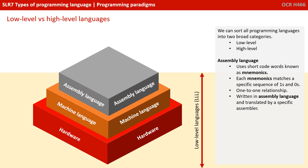Next, on top of machine languages came assembly languages. These made use of short code words known as mnemonics. Each mnemonic matches a specific sequence of machine code 1s and 0s — in this way it's a one-to-one relationship. Assembly language is written and then translated by a specific assembler.